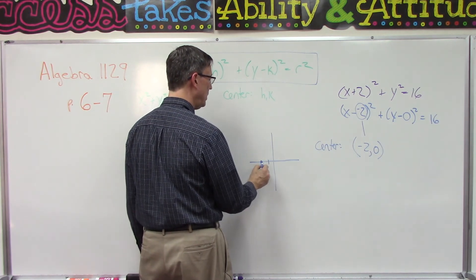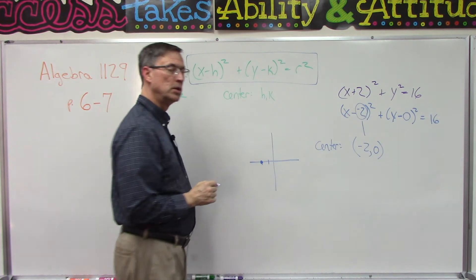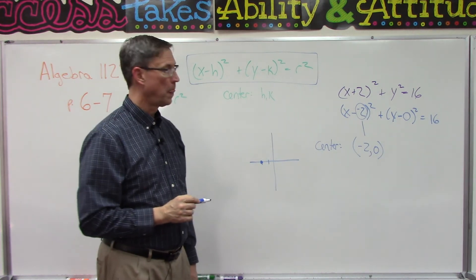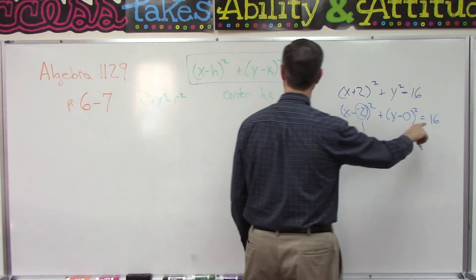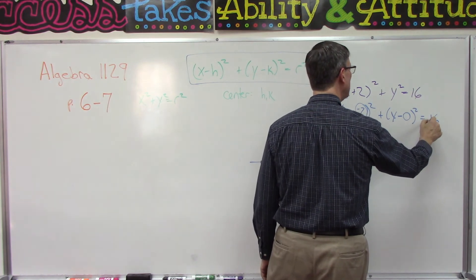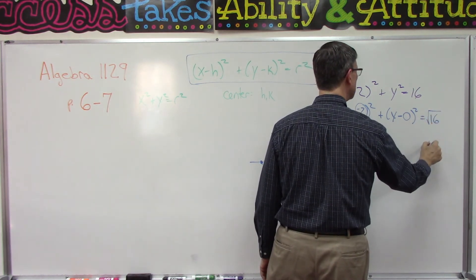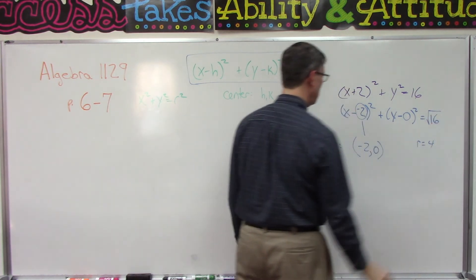And instead of going up or down, it's going to be right here on the axis. That will be the center of this circle. And then the radius is the square root of 16, so the radius is four.